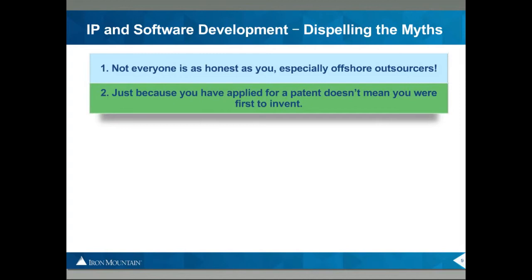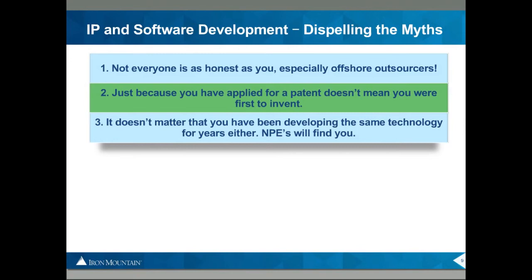Just because you applied for or have a patent doesn't mean you were the first to invent. Someone else can produce evidence that proves otherwise. If you can't defend against that, you might lose everything you worked so hard to produce. And it doesn't matter that you've been developing the same technology for years — patent trolls, also known as non-practicing entities (NPEs), buy up large chunks of intellectual property for the sole purpose of seeking out competing business concerns to legally extort money from them, causing you to spend big money on your case.